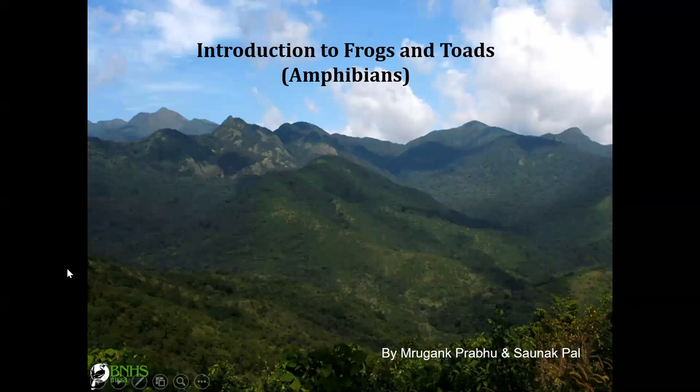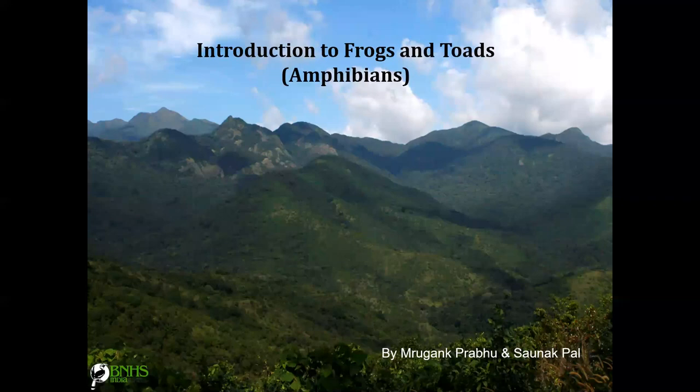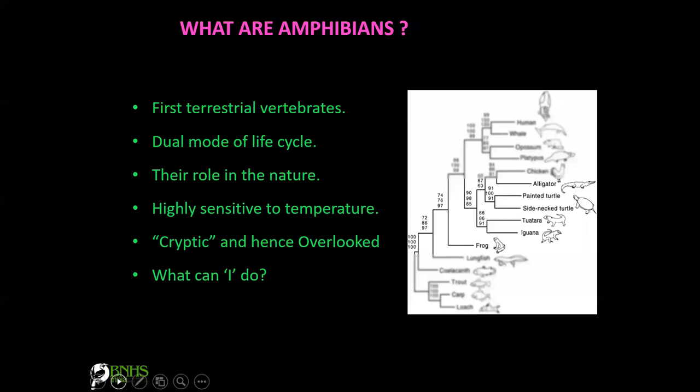Many of you know amphibians are of two types — frogs and toads — and we'll be looking into detail about what they are and how to identify them. Amphibians are the first terrestrial vertebrates and a very ancient lineage. They have a dual mode of life — 'amphi' means both, and 'bios' means life — so they share two lives.